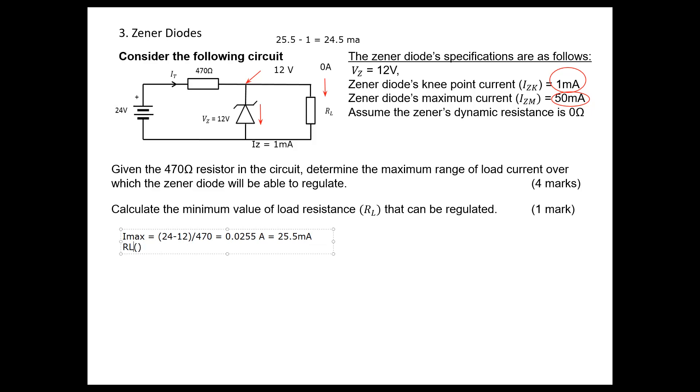RL minimum should be voltage divided by 0.0245, so that will give you 489.8 ohms resistance.